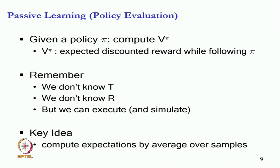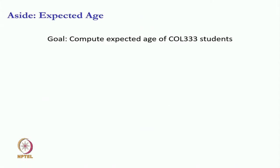If you know this idea well, and I think you know, but you have not maybe explicitly seen it in this form, then everything is just an application of that carefully and intelligently. So what is this idea of computing expectations by taking average? So let us say my goal is to compute the average age of all of you.